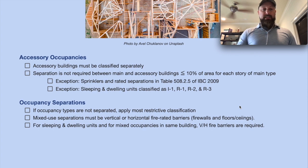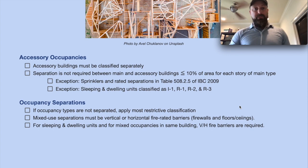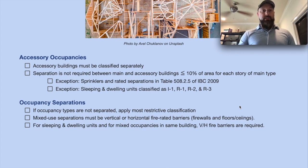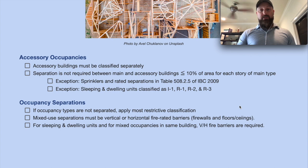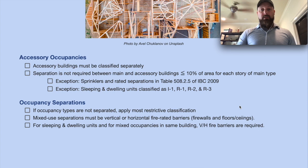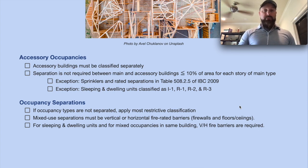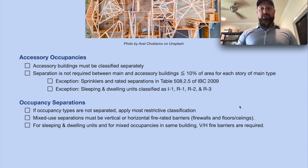For accessory occupancies, accessory buildings must be classified separately. Separation, however, is not required between main and accessory buildings if it's less than or equal to 10% of the area of each story of the main type or classification. The exception is sprinklers and rated separations — that's in table 508.2.5 of IBC 2009.